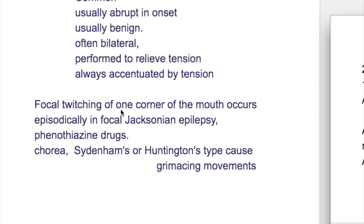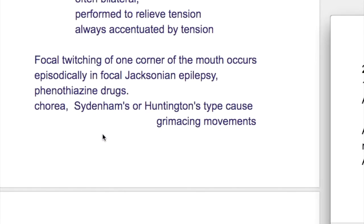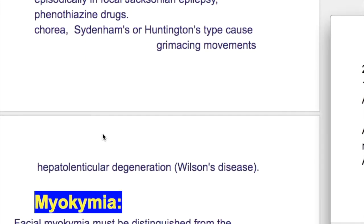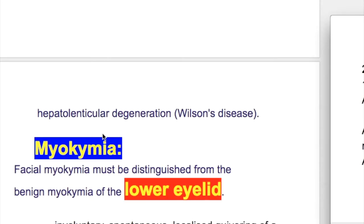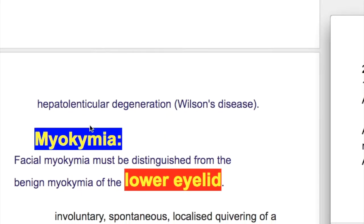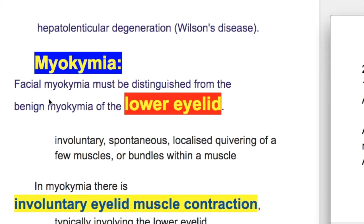Focal twitching of one corner of the mouth occurs episodically in some other conditions like focal Jacksonian epilepsy, phenothiazine therapy, chorea, Sydenham chorea, Huntington chorea, and hepatolenticular degeneration of Wilson disease.